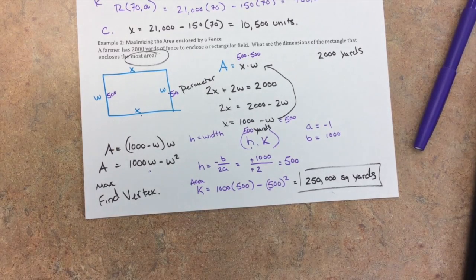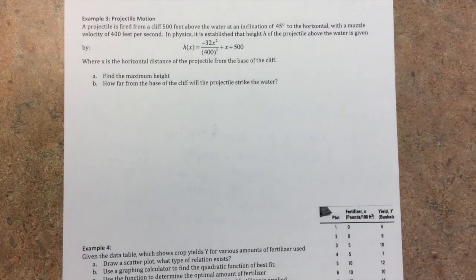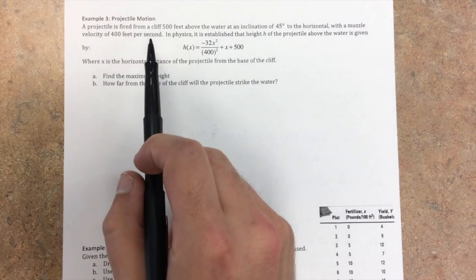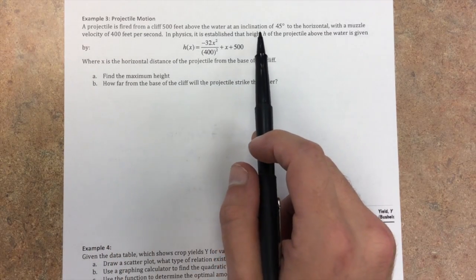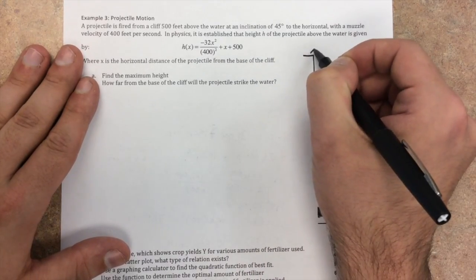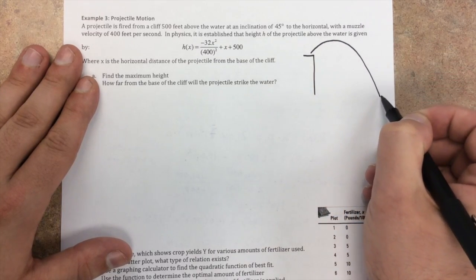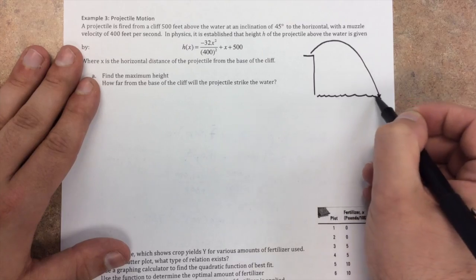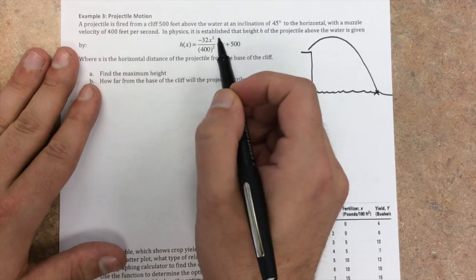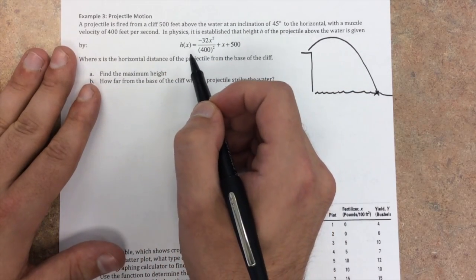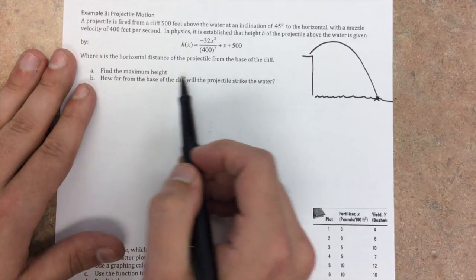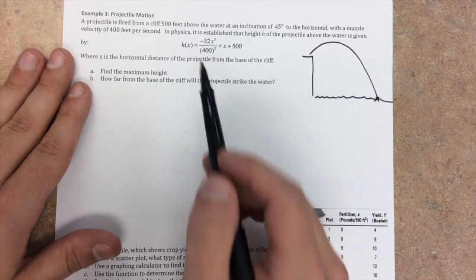We've got one more story problem on the back. Example 3, for all my physics students, past and present, is a projectile motion problem. A projectile is fired from a cliff 500 feet above the water at an inclination of 45 degrees to the horizontal. So what that means is, you have this cliff, and something's getting fired, and then it's coming back down, and it's going to hit the water somewhere out here, with a muzzle velocity of 400 feet per second. So in physics, we are given this equation for the height. So negative 32x squared over 400 squared plus x plus 500, where x is the horizontal distance from the base of the cliff. Find the maximum height.